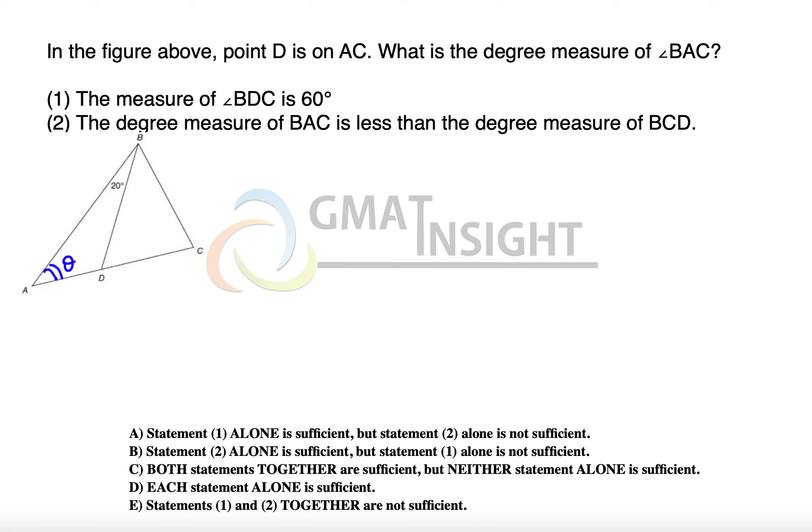But let us see what we have from these statements. The first statement says that the measure of angle BDC is equal to 60 degrees. Let's quickly mention it here. BDC is equal to 60 degrees.